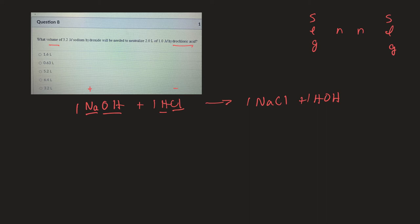So hydrochloric acid, I have a volume of 2.0 liters, and I have a concentration of 1.0 moles per liter. And for sodium hydroxide, this will be my given. So this side will be our HCl.